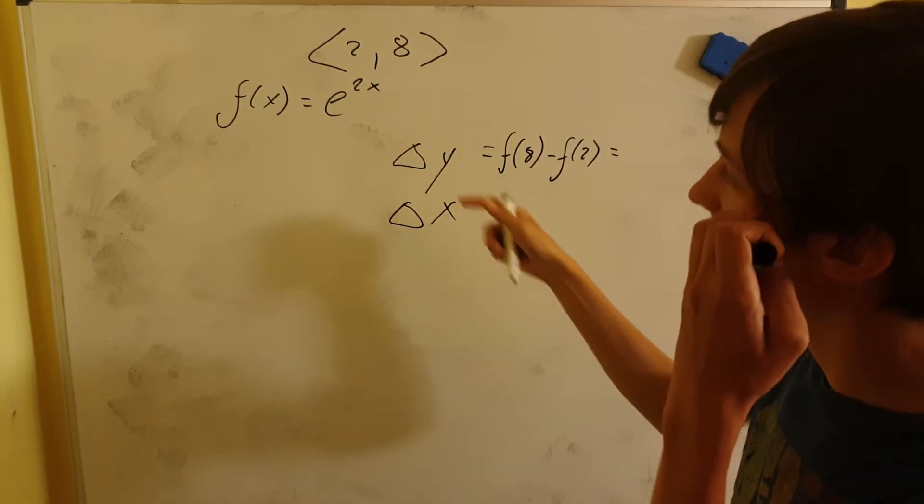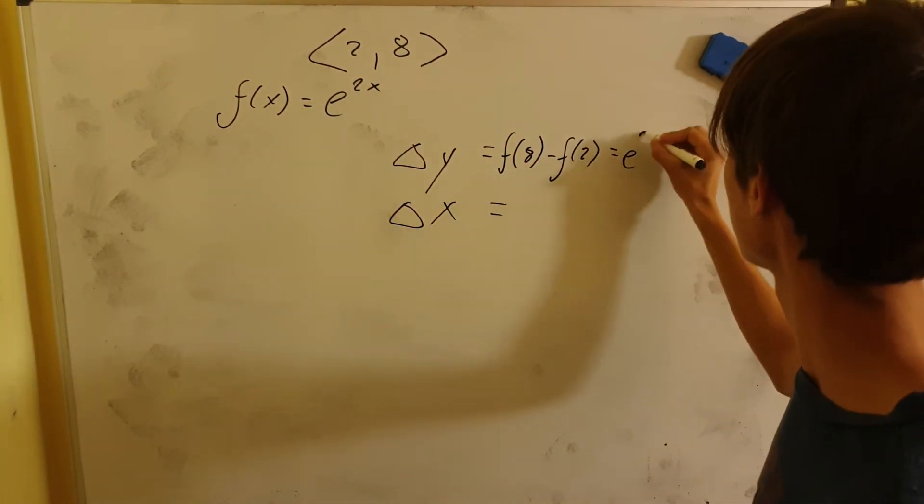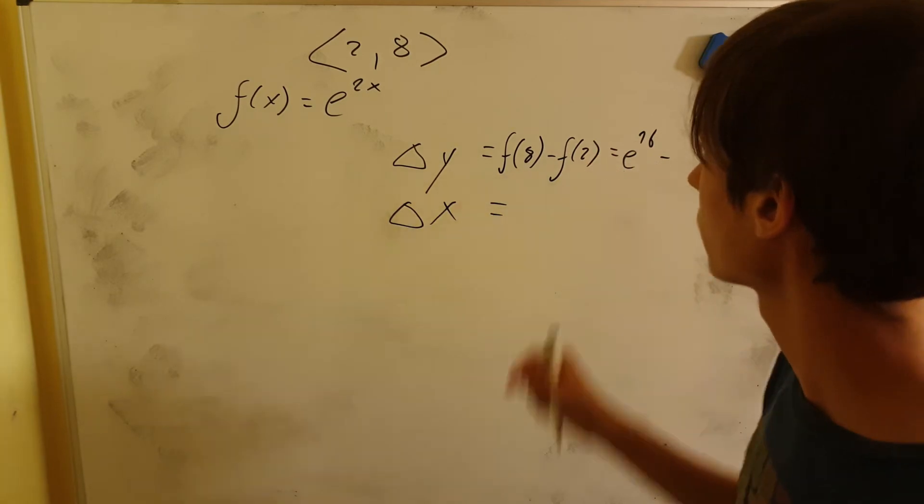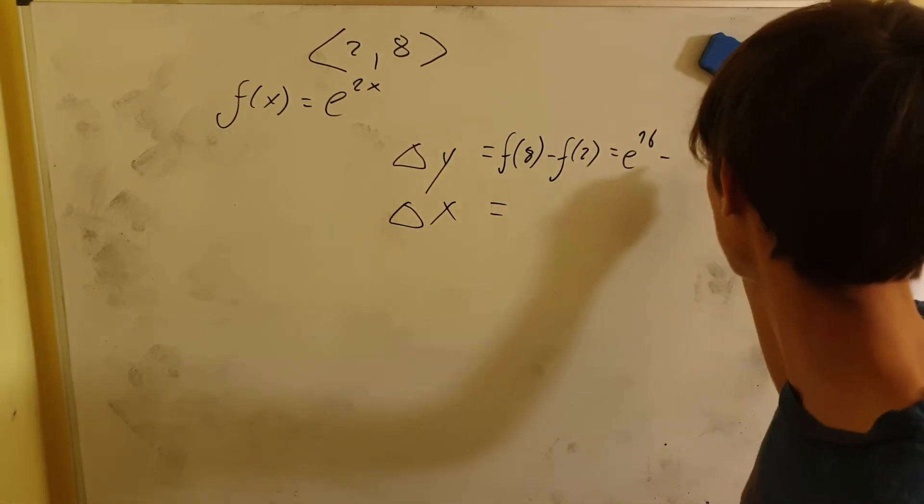If we plug in eight we get e to the 16 power, and then subtract - plug in two - e to the fourth power.